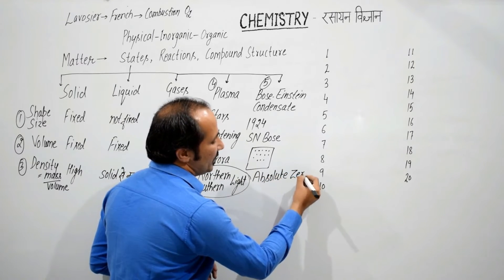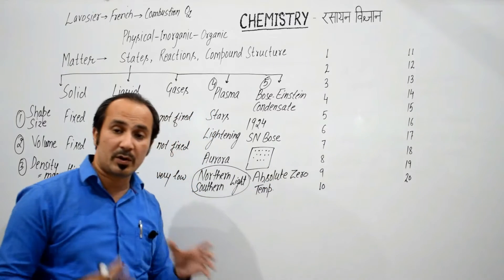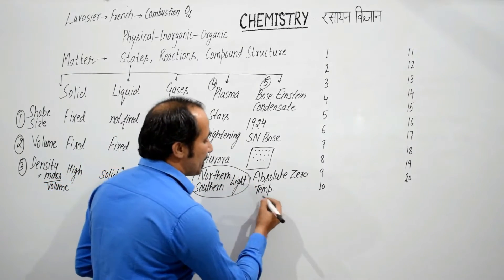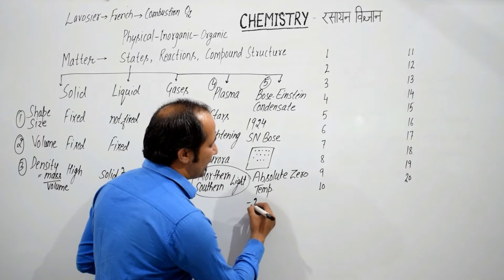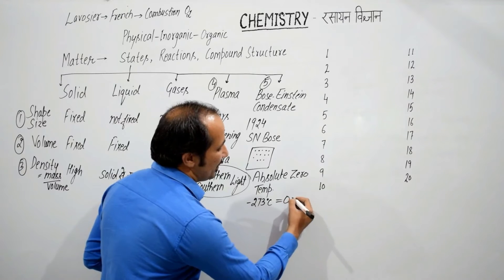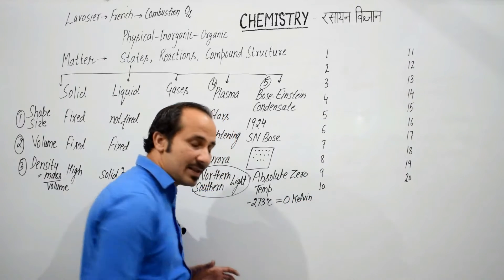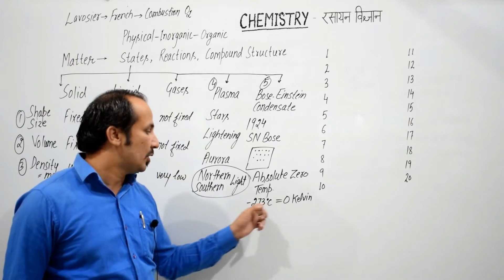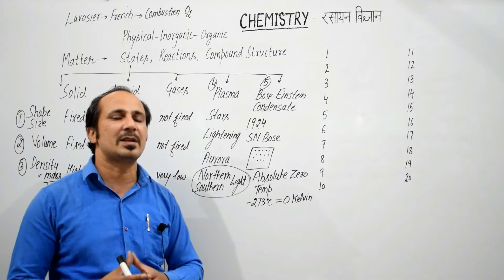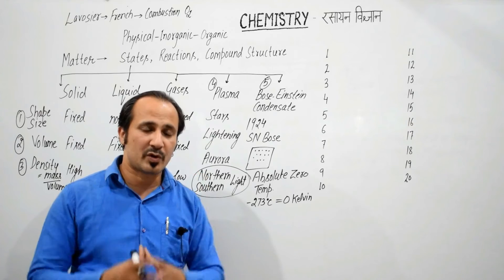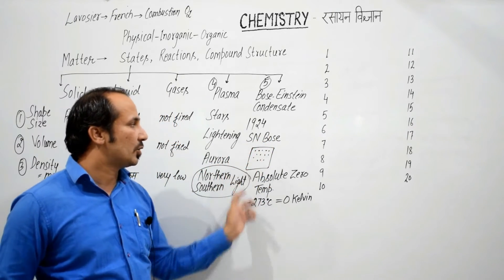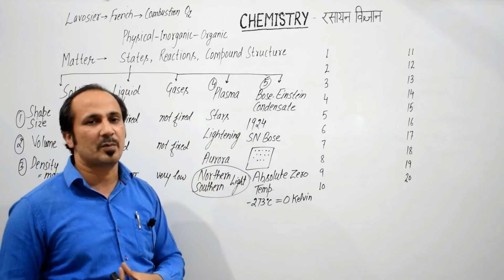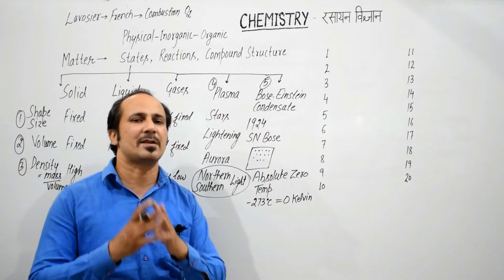Absolute zero temperature की अत्यंत कम तापमान पर, बहुत कम temperature पर जो moment है ions की वो बंद हो जाती है, freeze हो जाते हैं. और वो temperature क्या कहलाता है — absolute zero temperature. उसकी value होती है minus 273 degree Celsius या zero Kelvin. Kelvin is the SI unit in which we measure temperature. So zero Kelvin equals minus 273 degree Celsius. इतने कम temperature पर particles का motion बिल्कुल freeze हो जाता है, रुक जाता है — तो पदार्थ की उस अवस्था को कहा जाता है Bose-Einstein Condensate, क्योंकि S.N. Bose ने concept दिया था, और Einstein की theories से मिलाकर भी इन्होंने काम किया था, इसलिए Bose-Einstein Condensate नाम दिया जाता है.